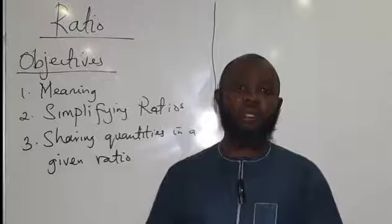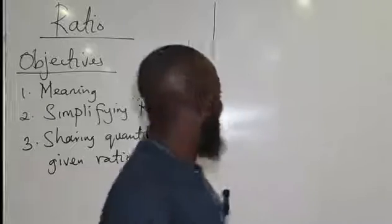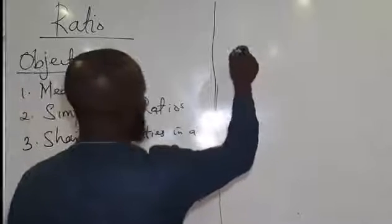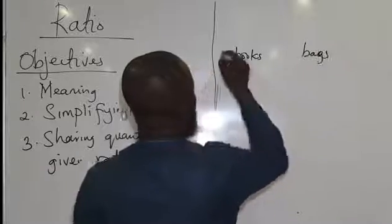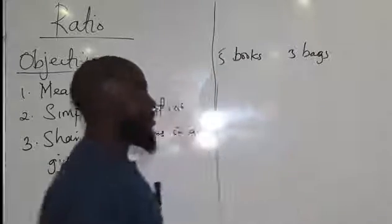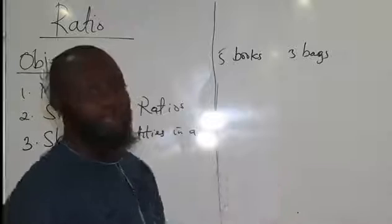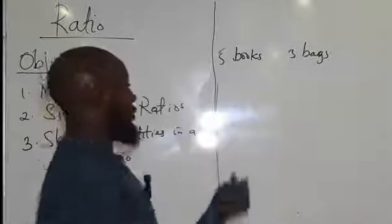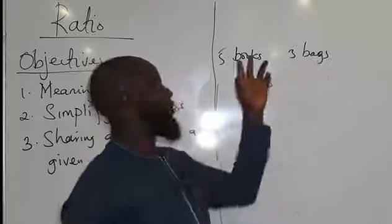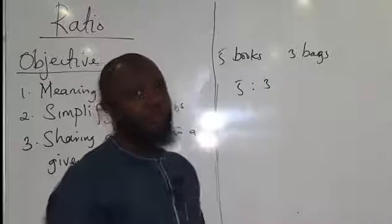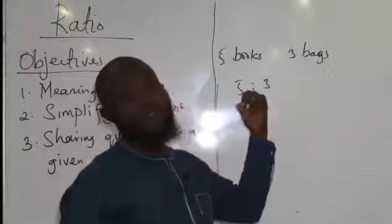Ratio is a way of comparing the sizes of two or more quantities of items. For instance, we have books and we have bags. We have 5 books and 3 bags. So we want to compare this using ratio. We can say the ratio of books to bags is 5 to 3. Or if we want the ratio of bags to books, that would be 3 to 5. So the item mentioned first will be the number that we write first.